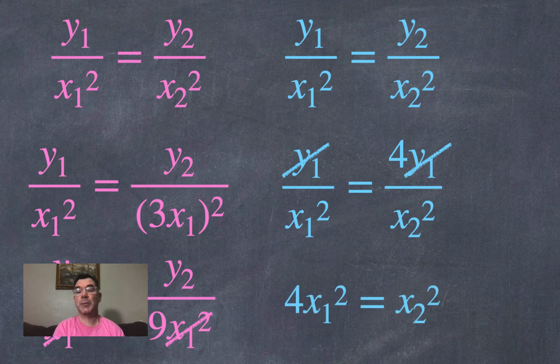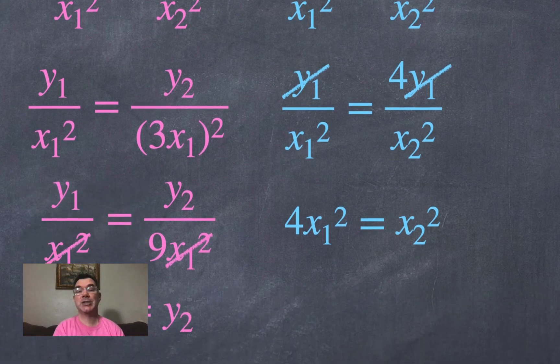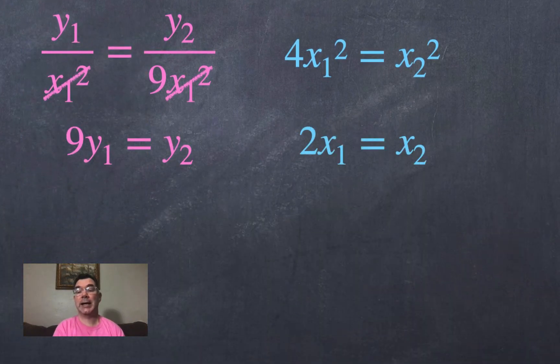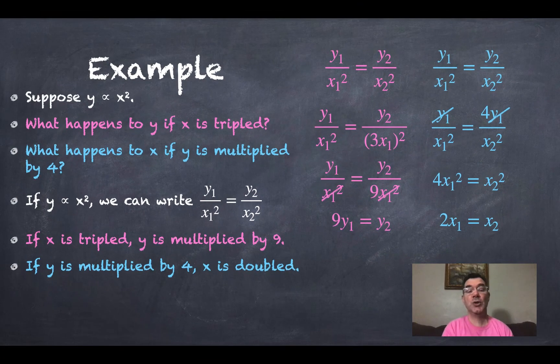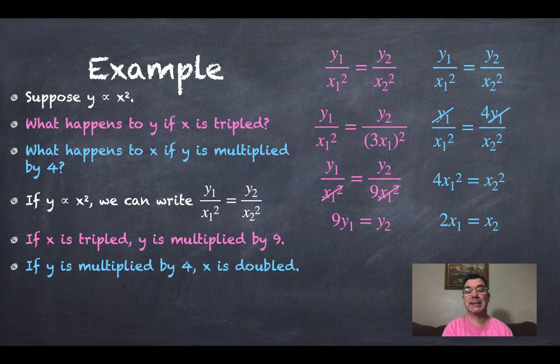And then I can cross multiply and I can get 4 times x1 squared equals x2 squared. And I can square root both sides to get that 2 times x1 is equal to x2. So what that means is the second x is only twice as big as the first x. So even though the y got multiplied by 4 to get the second y, I only multiply the x by 2 to get the second x. So if y is multiplied by 4, then x is doubled.